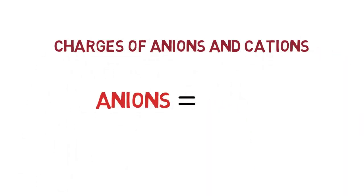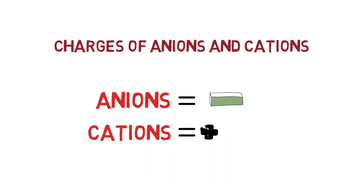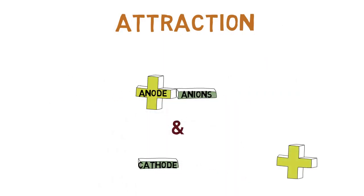Here comes your next concept of anions and cations. Anions are negatively charged whereas cations are positively charged. Let's see how ions attract to electrodes. Anode attracts anions and cathode attracts cations. Our basic concept for anodizing process is clear.